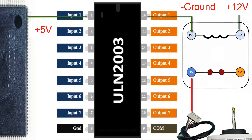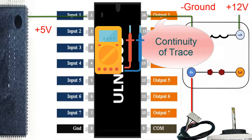Failure in the ULN2003 circuit's output track to the coil: to diagnose, visually inspect the involved track and measure continuity between the corresponding pins of the ULN2003 circuit.